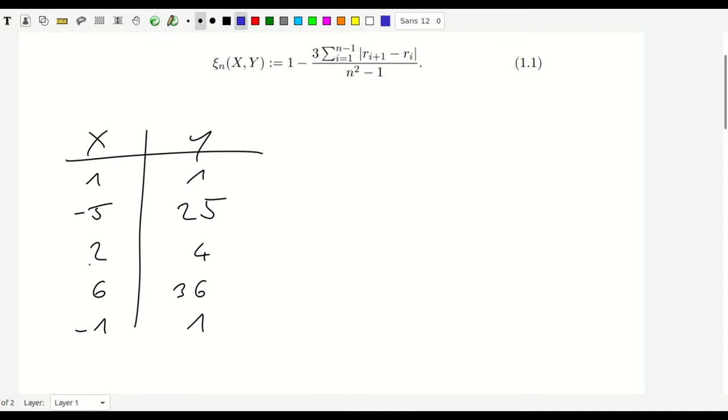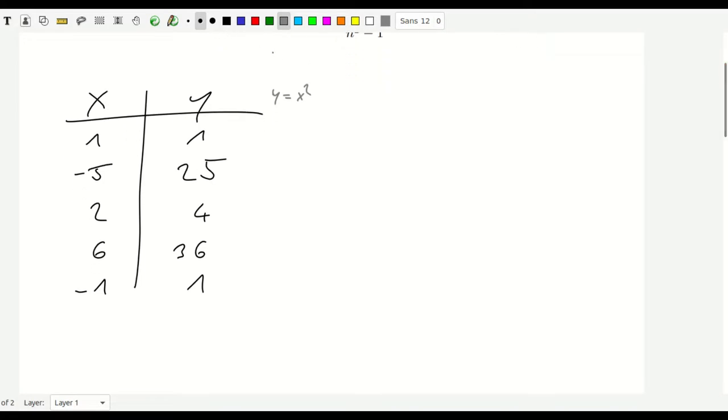And what we're going to do is we're going to do the ranking. And of course, so now it's easy to see with x and y that y indeed depends on x because it's simply y is x squared. So we should end up with a coefficient of correlation that's big, that's somewhat close to 1. Okay, but let's try.